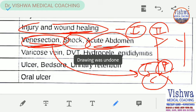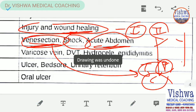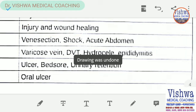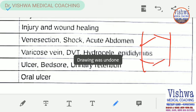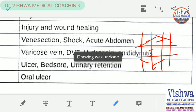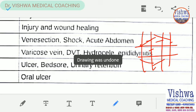For acute abdomen, remember to draw the quadrants — hypochondriac, epigastric, umbilical, iliac fossa, and hypogastric. Then write about the important differential diagnosis depending upon the quadrant. This is the diagram we can draw, as we discussed in class.